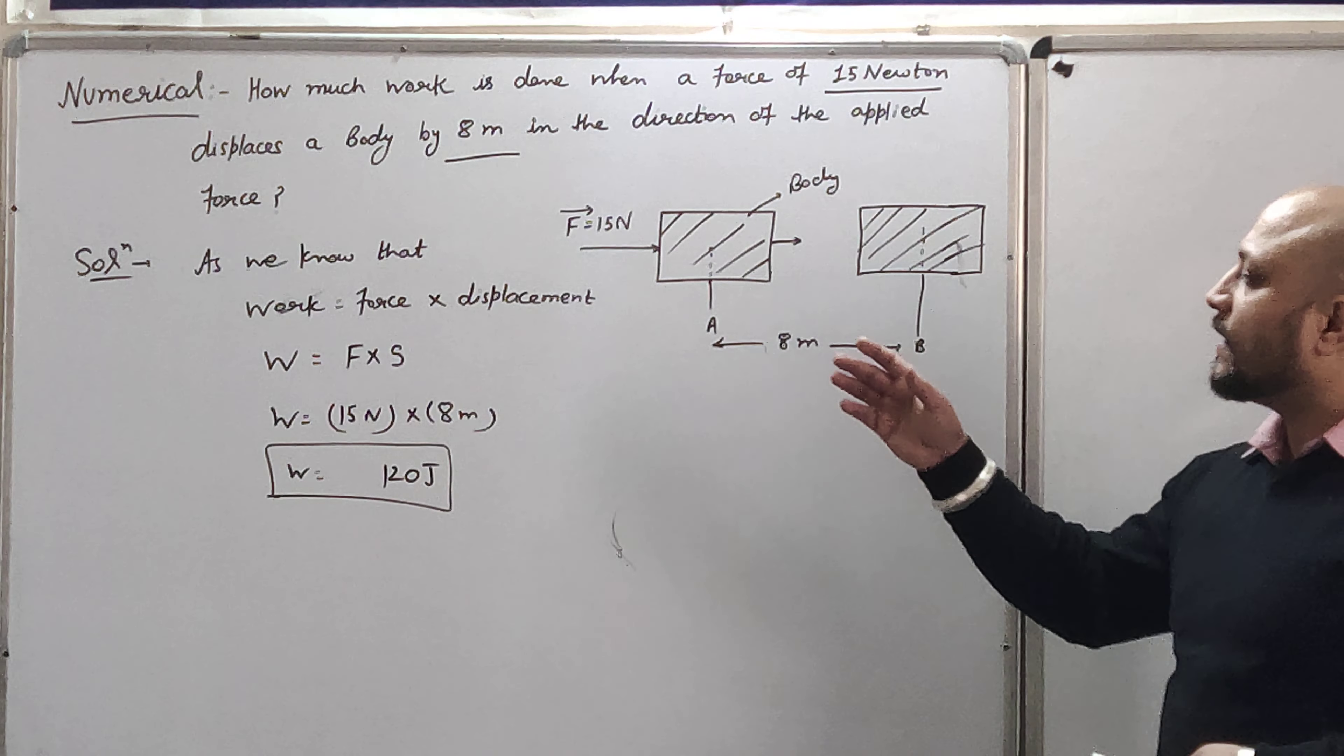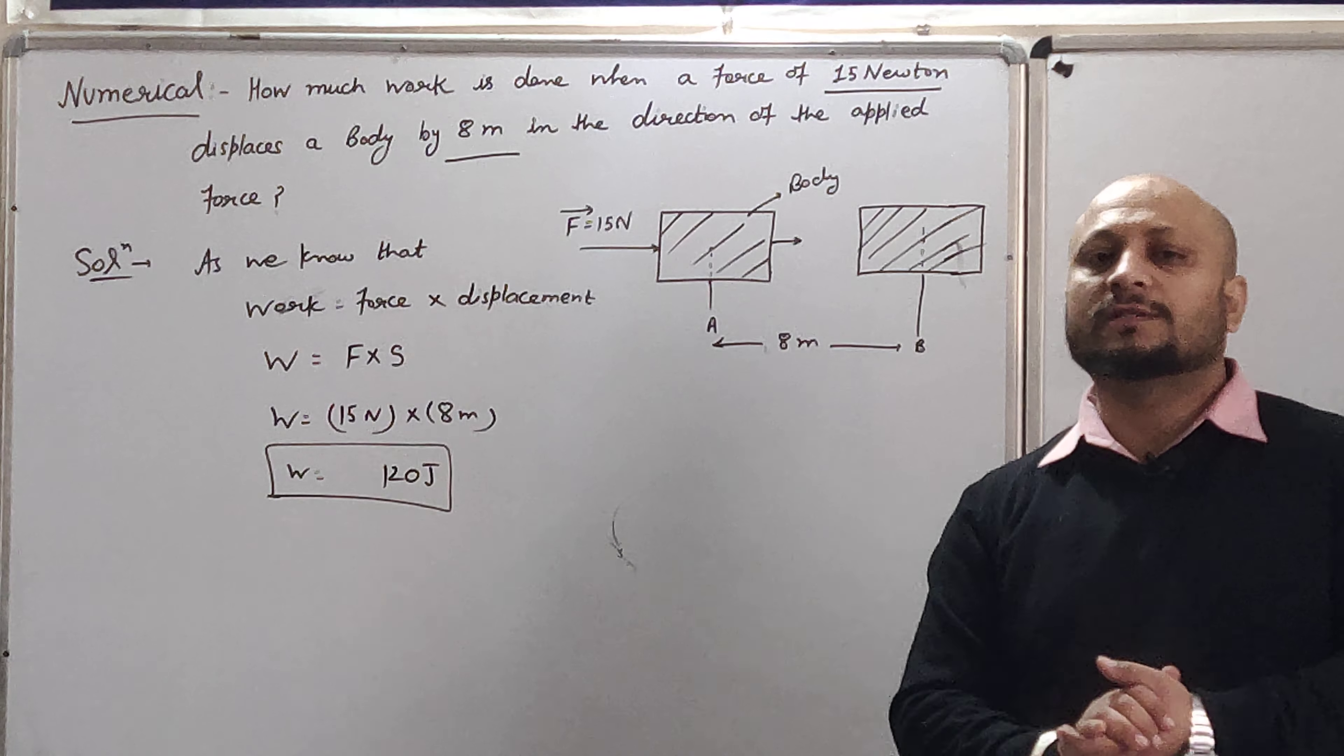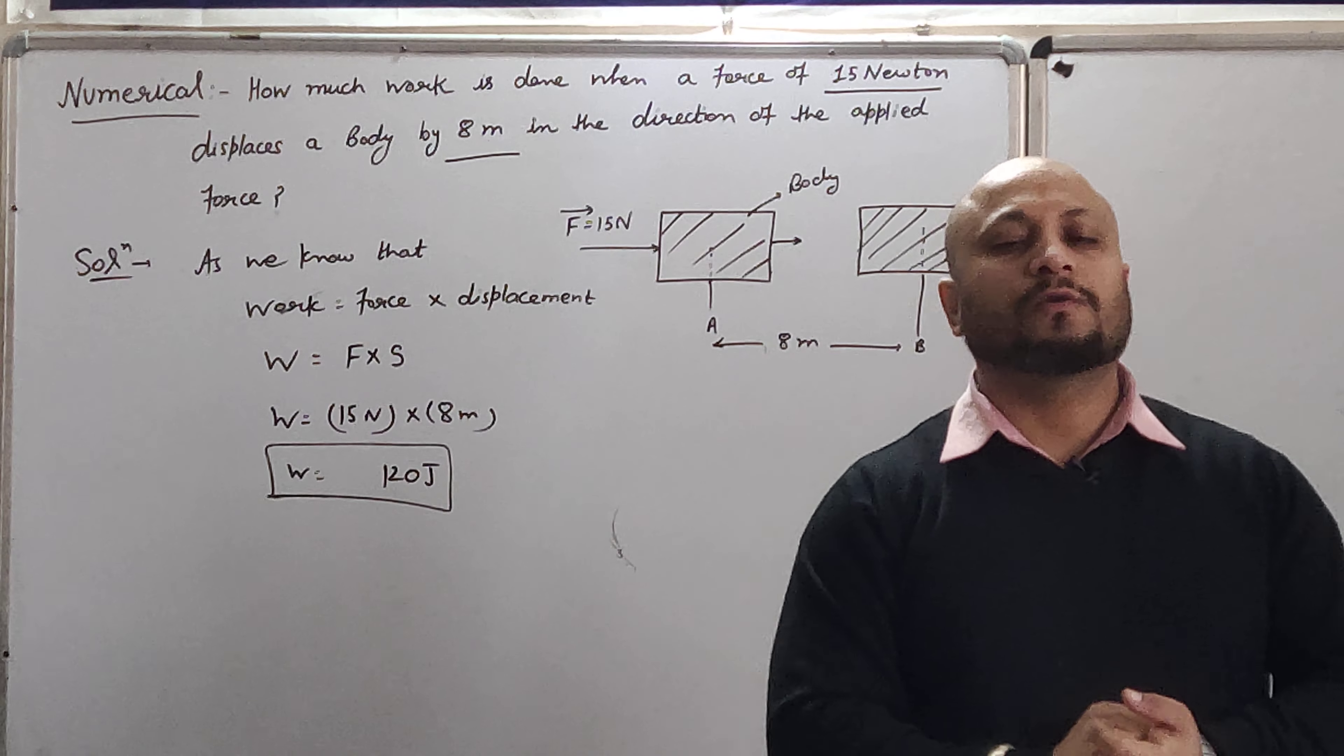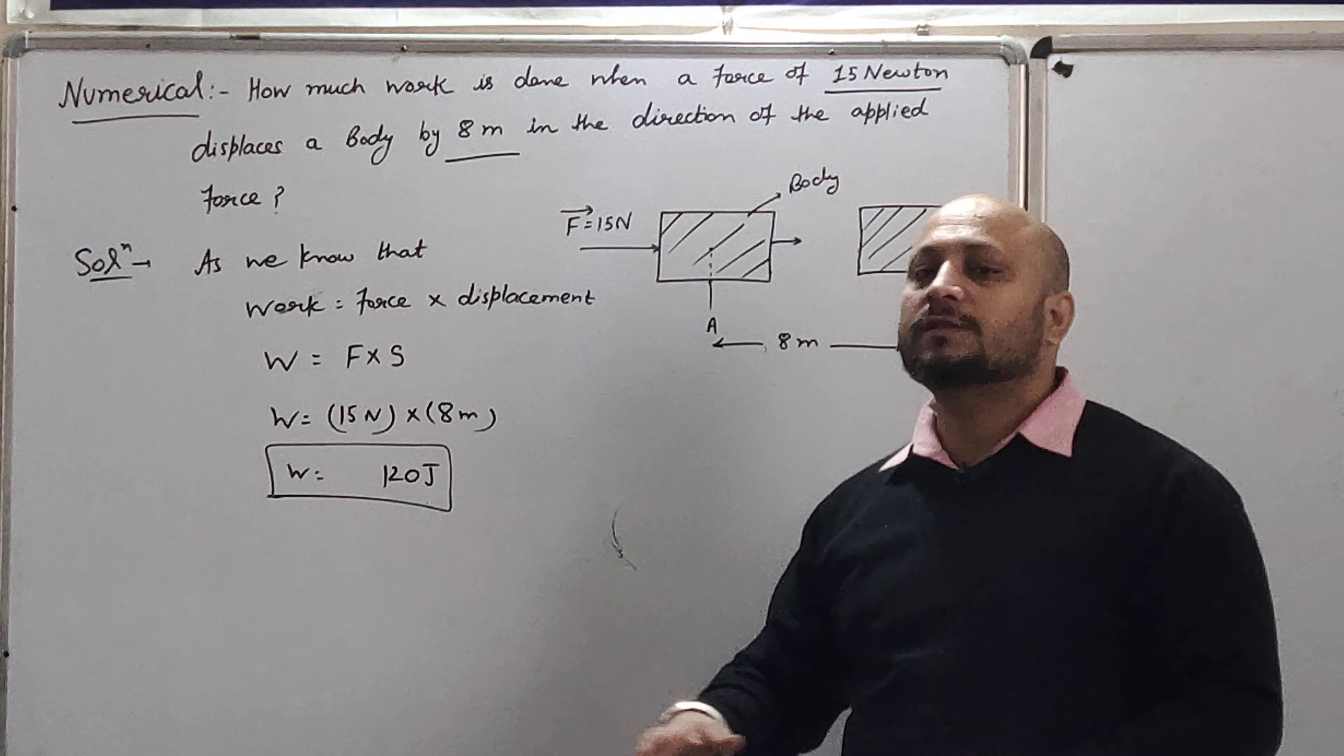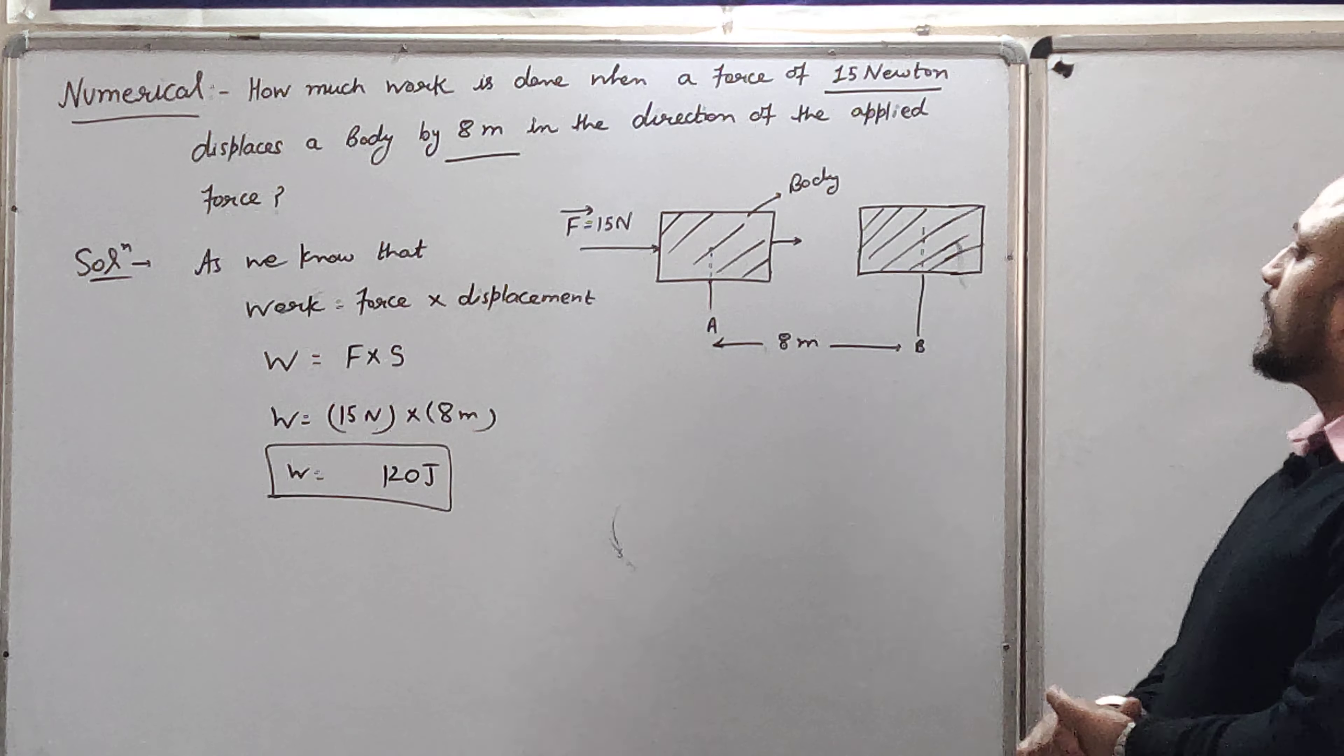कौन सा formula लगाया? Work is equal to force into displacement. बहुत ही simple numerical था. Two marks का ये numerical है. Work के उपर है. जिसमें आपको simple formula रखना है. And after putting the values, you have to calculate the work. What is J? The unit of work is joule in SI system.